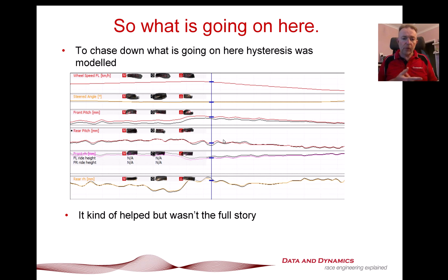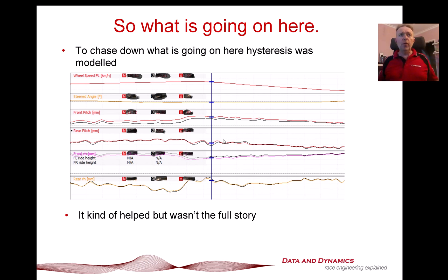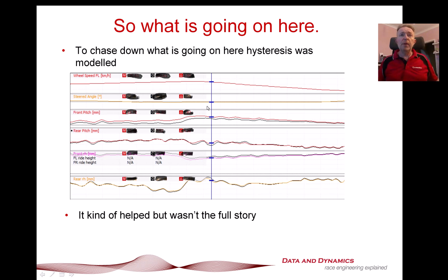So what was going on here? I figured: am I dealing with some hysteresis? So I threw in some hysteresis. The colored is before the hysteresis, the black is after. We've got speed, steered angle, front pitch, rear pitch, front and rear ride height. You can see it's made a bit of a difference, but it's nowhere near to resolving this situation.